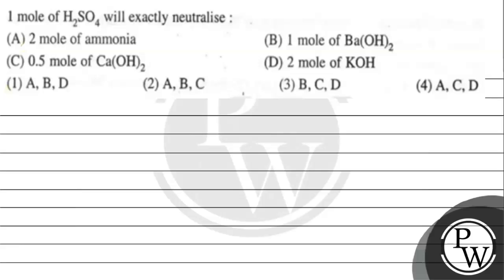Let's read this question. The question says: 1 mole of H2SO4 will exactly neutralize — Option A: 2 moles of ammonia. Option B: 1 mole of barium hydroxide. Option C: 0.5 mole of calcium hydroxide. Option D: 2 moles of potassium hydroxide.